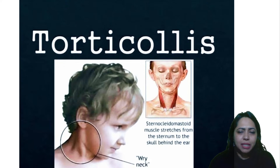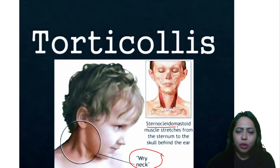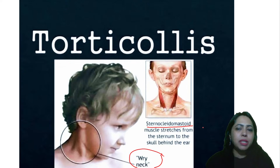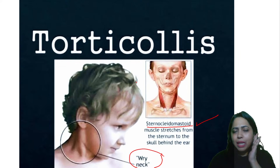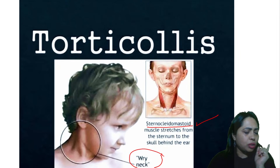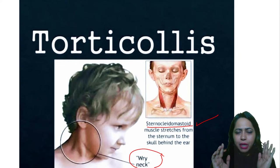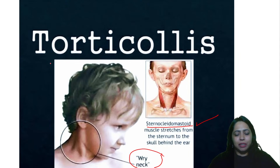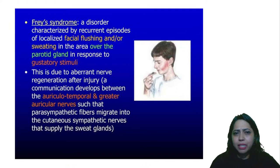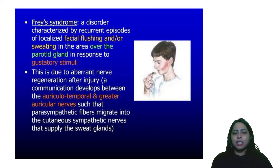Torticollis — also called wry neck. The sternocleidomastoid muscle is congenitally shorter on one side, causing the head to tilt toward the affected side and hampering neck movement. When one SCM contracts, the head turns to the opposite side; when both contract, you can lift the head off the pillow. The sternocleidomastoid is supplied by the spinal accessory nerve.